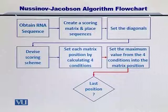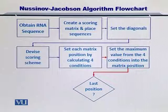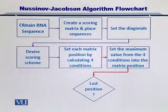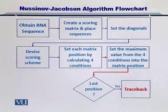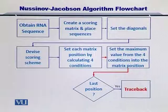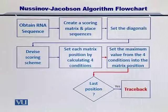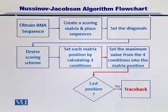Once you have filled up a single position, you have to repeat this process over and over again until you fill all the matrix positions that are above the diagonal of the matrix. Once you finish all the positions, you can start with another step in the NJ algorithm — that is the traceback. The traceback will help you to extract meaning out of the numbers or the scores that you have put in the matrix.